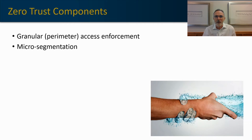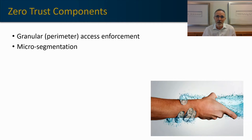The next component is micro-segmentation. Once a user is in the network, what visibility do they have to the larger network itself? In a zero trust environment, they have very limited visibility — generally just to the applications and resources they're permitted to access in order to perform their job. Today's environment with a remote user VPNing into a network generally has the same visibility as the network admin, so we need to change that in a zero trust framework.